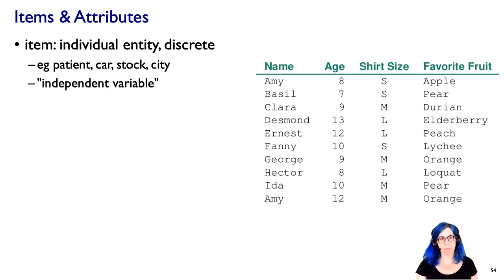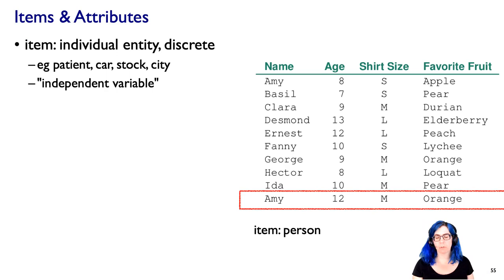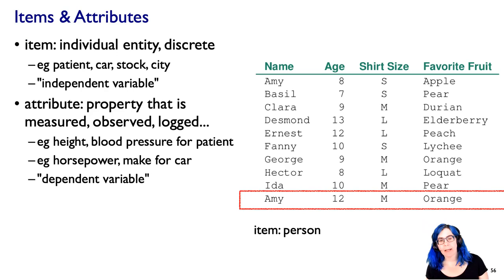So I'm going to use the vocabulary of items and attributes. By item, I mean an individual entity. It's something that's discrete rather than continuous. So like a patient in a hospital, a car, a stock of a company, a city. Those of you who have a stats background might think of these as independent variables. So in this case, my item, which is one of these table rows, well clearly that seems to be a person.